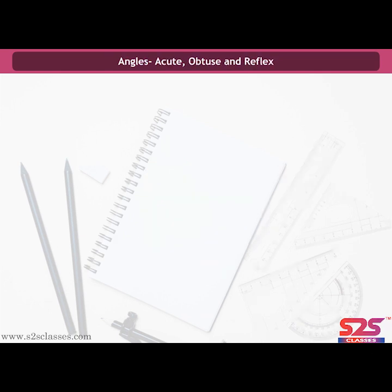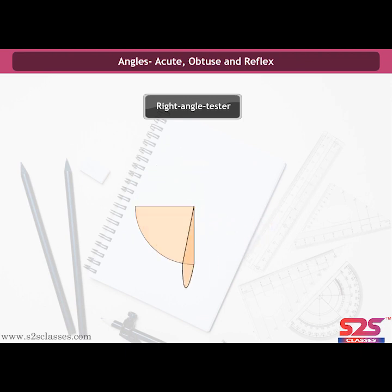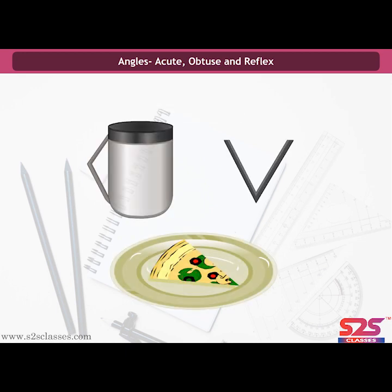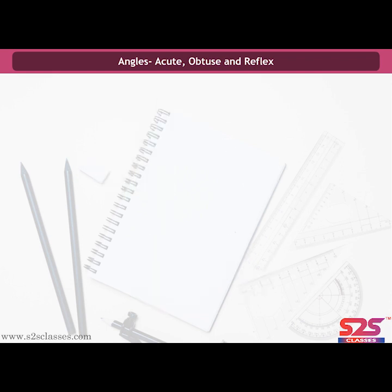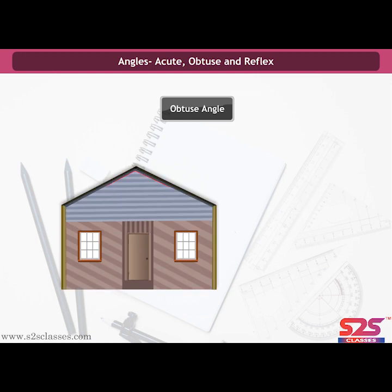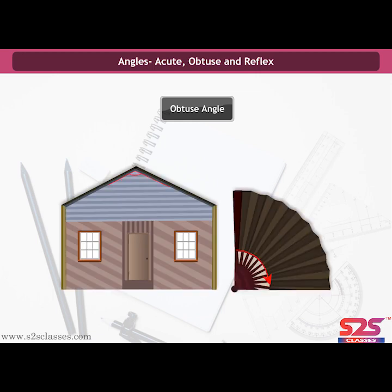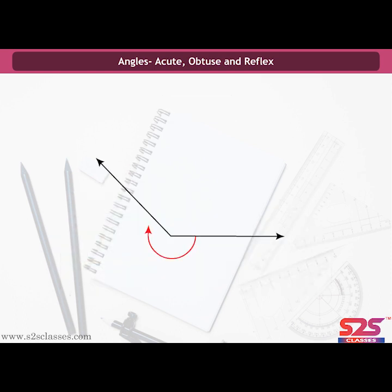Angles: Acute, Obtuse and Reflex. Let us first make a right angle tester by folding a piece of paper as shown. Using the tester, we can compare angles. Angles smaller than a right angle are called acute angles. Angles greater than a right angle but smaller than a straight angle are called obtuse angles — examples include a rooftop and a Chinese fan. An angle which is greater than a straight angle and less than a complete angle is known as a reflex angle.